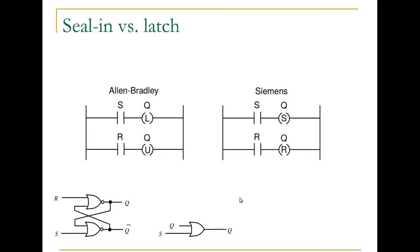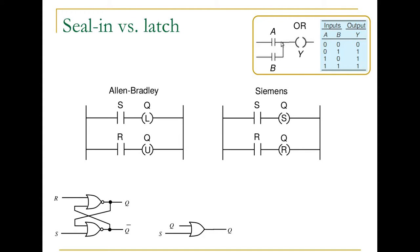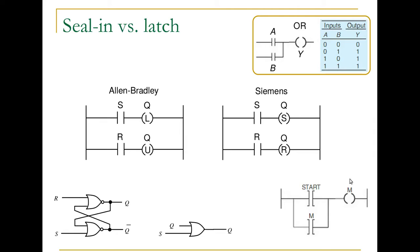So Q equals Q OR S. This is the ladder logic representation of that, where Y equals A OR B — the ladder logic version of a Boolean OR operation. In a seal-in circuit, we use a memory bit: M equals Start OR M. If M is zero and we press the start button, the start input goes to one, M goes to one, and from that point on the memory bit stays one regardless of the start button state. That's sealed in.